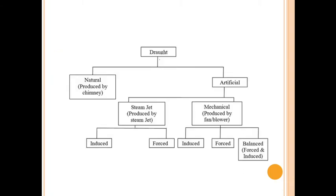Draught is classified as natural and artificial. Under artificial, there are two types: one produced by steam jet and another produced by fan or blower. The steam jet type is further classified into induced and forced. Mechanical draught is also classified into induced, forced, and balanced types. Balanced draught is a combination of forced and induced.